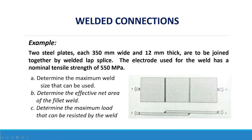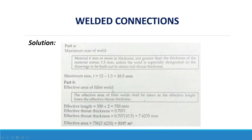Part B: Determine the effective net area of the fillet weld. The effective area = effective length × effective throat thickness. Effective length = 350mm × 2 (double weld) = 700mm. Effective throat thickness = 0.707 × T = 0.707 × 10.5mm = 7.4235mm. Therefore, effective area = 700mm × 7.4235mm = 5,197 mm².